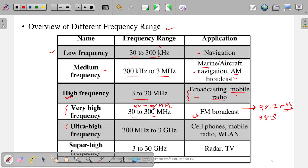After very high frequency comes ultra high frequency, from 300 megahertz to 3 gigahertz. In this region, cell phones, mobile radio, and WLAN are used. The mobile phone used today operates in this frequency range. Previously, before 4G and 3G, mobile communication was at around 1.9 gigahertz.